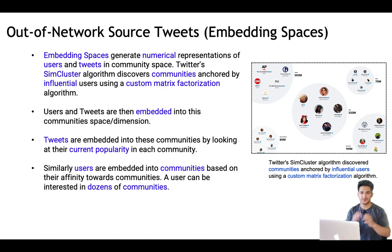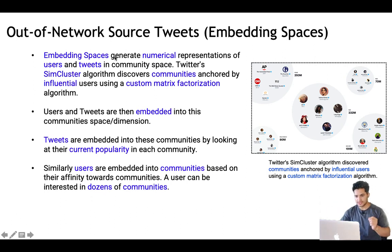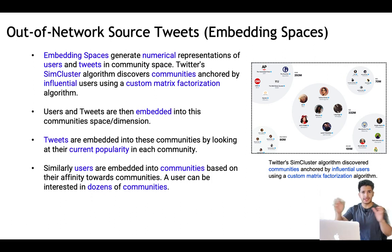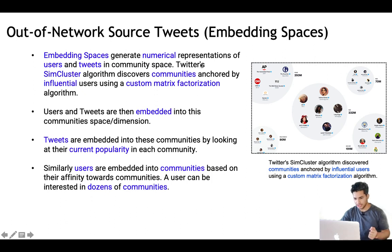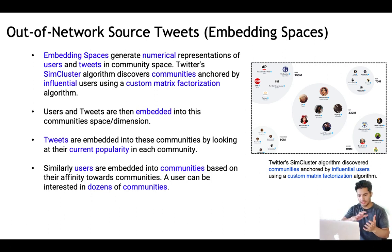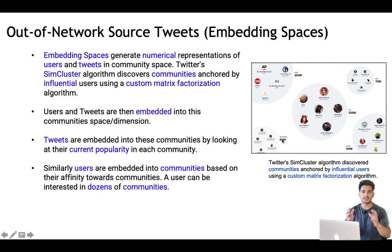The other approach for out-of-network sourcing is embedding spaces. Once you have embedded representations of users, you can do approximate nearest neighbor search to find relevant tweets. Users and tweets need to be represented as vectors in a community space. Twitter has an algorithm called SimClusters, which discovers communities anchored by influencer users using a custom matrix factorization algorithm. Essentially, influencers and celebrities are clustered into communities — for example, a community of pop, a community of news, and so on.